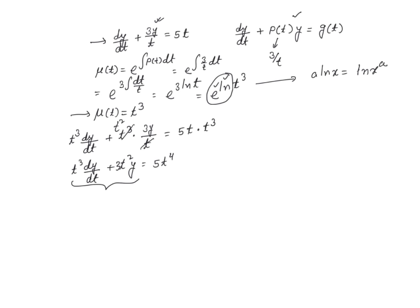Now, this left-hand side, as you know, is nothing but the derivative of the product of μ and y with respect to t. So μ in our case is t³. So this is the derivative of t³ times y, and that equals 5 times t to the power 4.